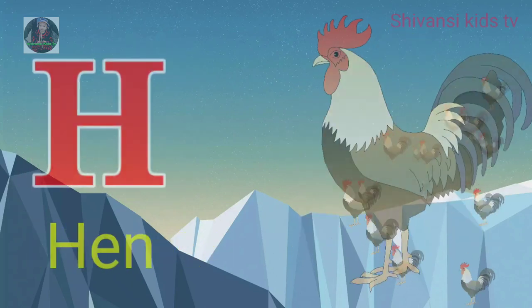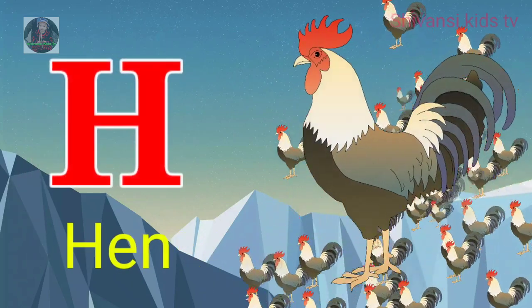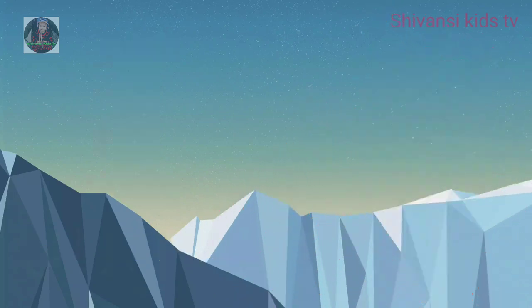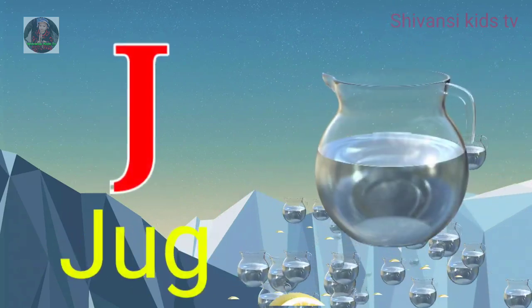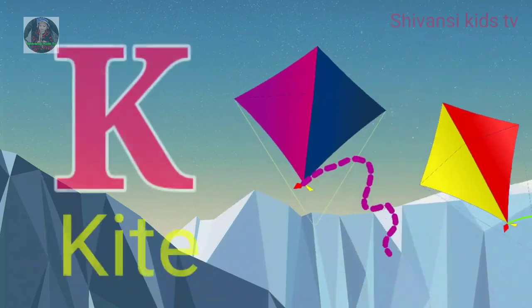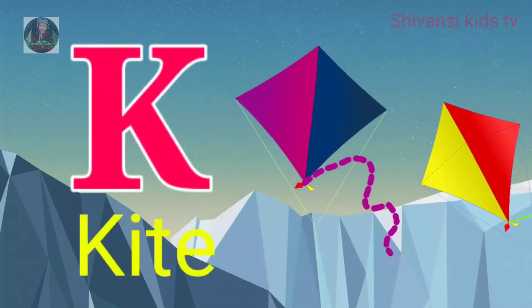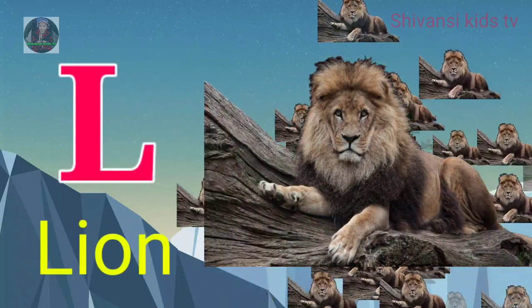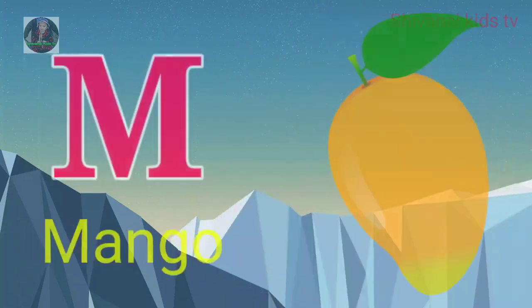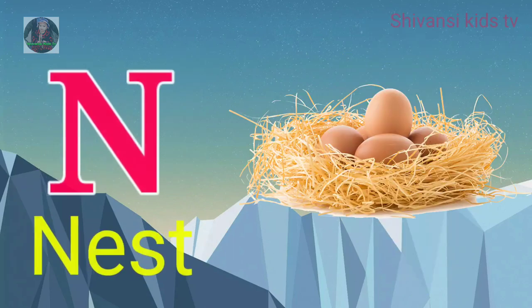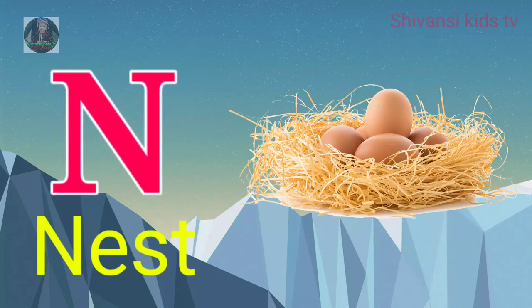H for hand, I for ice cream, J for jug, K for kite, L for lion, M for mango, N for nest.